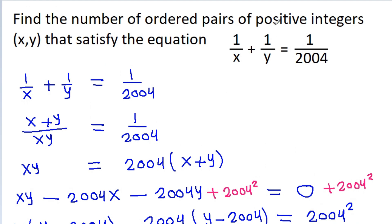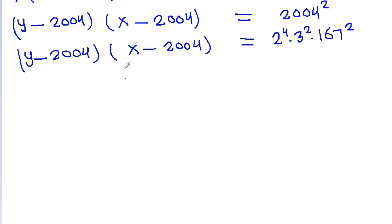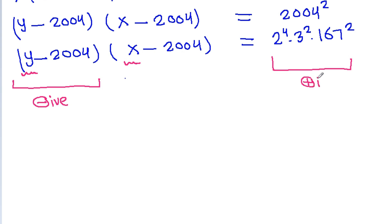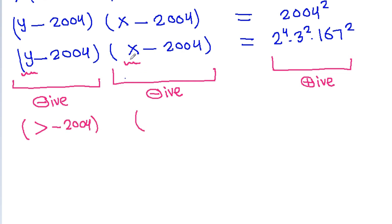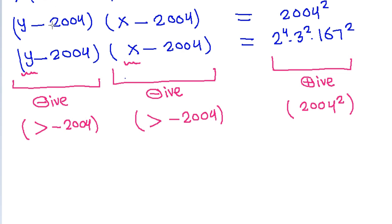And we have to find positive integers x, y. That means x is positive and y is also positive. Suppose y - 2004 is negative — then x - 2004 must also be negative. But since y is positive, y - 2004 > -2004, and similarly x - 2004 > -2004. So the product of two negative integers each greater than -2004 cannot equal 2004². So this case is not possible.